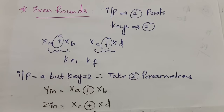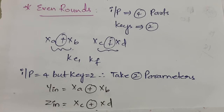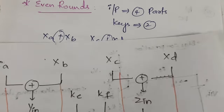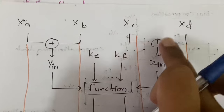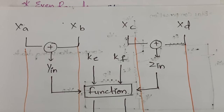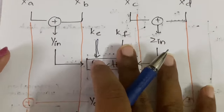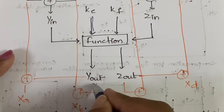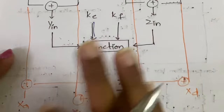You then pass Yin and key Ke into a function to generate Yout, and Zin and key Kf into the same function to generate Zout. Now we need to reconstruct four output values Xa, Xb, Xc, and Xd from these results.